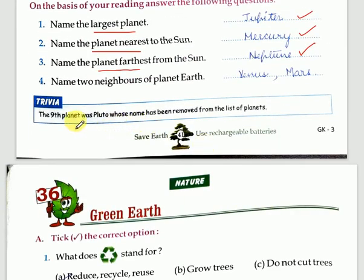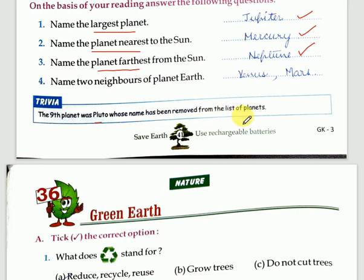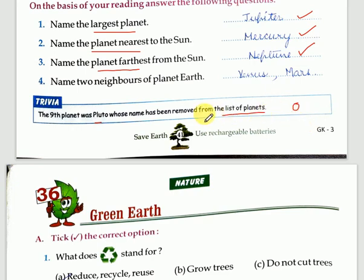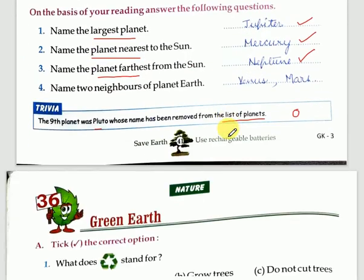Children, do you know there was one more planet? Before 2006, there was a ninth planet named Pluto. But now it has been removed from the list of planets because it is very small. That is why it has been removed and now it is called a dwarf planet — a small planet — and it is no longer counted in the solar system.